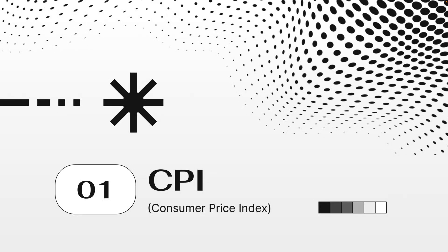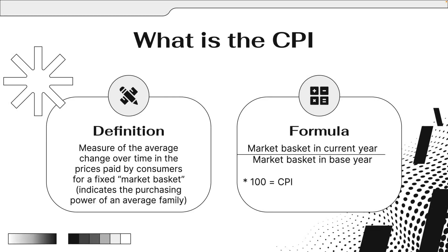The first thing we need to know about is the CPI — an acronym for Consumer Price Index. The CPI is the measure of the average change over time in the prices paid by consumers for a fixed market basket, indicating the purchasing power of an average American family. The formula is: market basket in current year divided by market basket in base year, multiplied by 100.